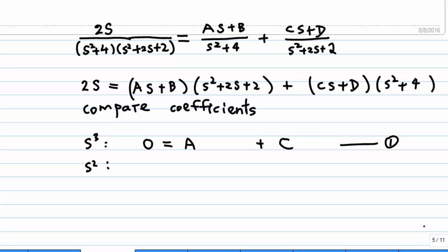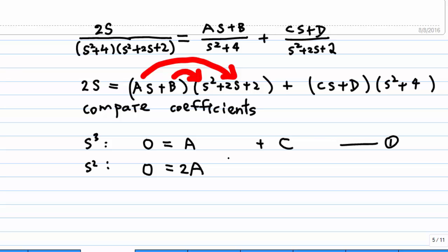Next, we compare x². On the left-hand side, there are no x² terms, so we write 0. On the right-hand side, the x² terms come from: ax times 2x giving 2ax², then b times x² giving bx², and d times x² giving dx². So equation 2 is: 0 = 2a + b + d.